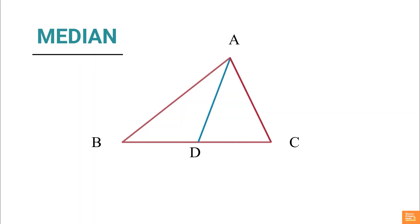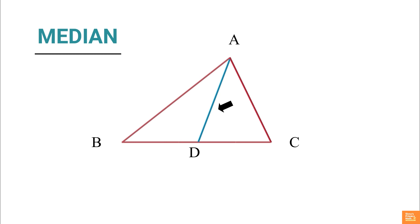Median: The line segment joining a vertex of a triangle to the midpoint of its opposite side is called a median of the triangle. The line segment AD is a median of the triangle. A triangle has three medians.